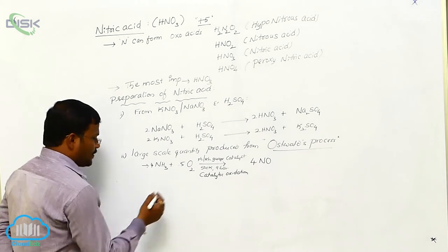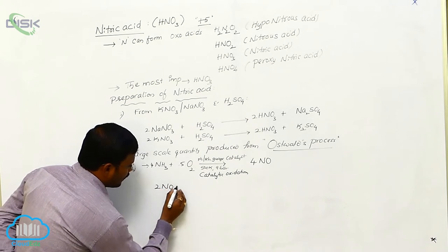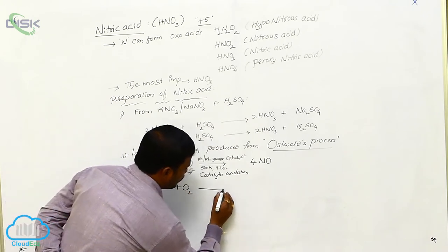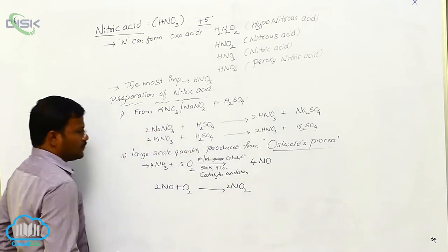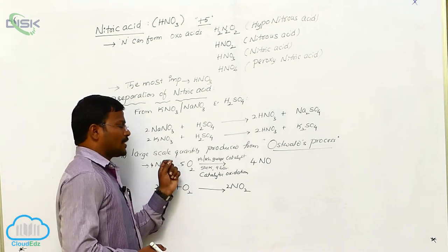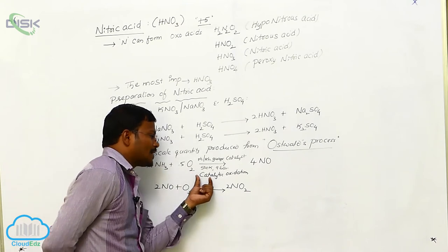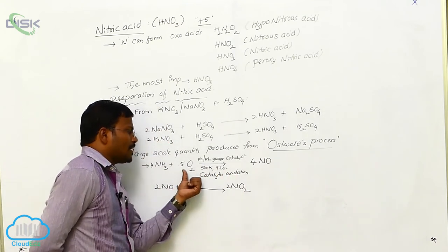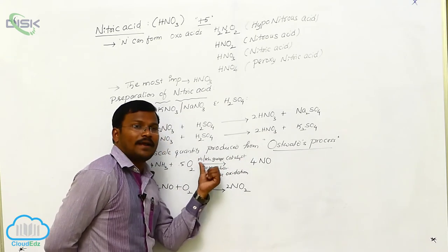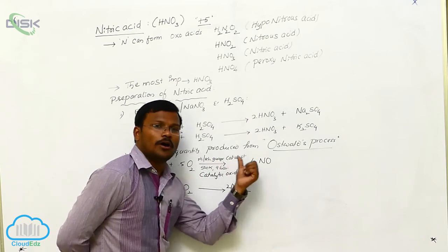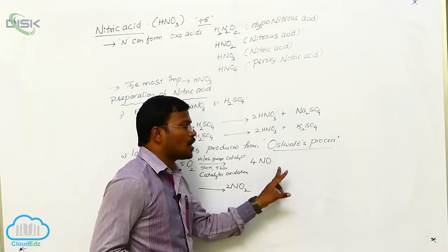In the next step, the formed nitrogen monoxide further reacts with oxygen and produces nitrogen dioxide. In the first step, ammonia undergoes catalytic oxidation in the presence of platinum or rhodium gauge catalysts at 500 degrees Kelvin temperature and 9 bar pressure to produce nitrogen monoxide as product.